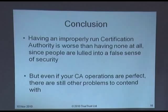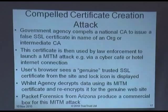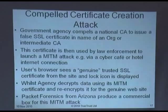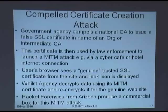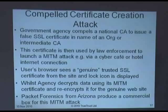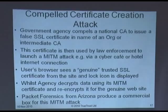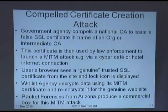Even if your CA operations are perfect, other problems remain. Compelled certificate creation: governments can compel their national CAs to issue false certificates in the name of any organization in the world. If you go to VeriSign — which is based in the US — the US government can ask VeriSign to issue a certificate in the name of anyone, or issue a subordinate VeriSign certificate to the NSA or CIA, allowing them to issue certificates for anyone, whenever they want. And they have no choice, because national security trumps everything.